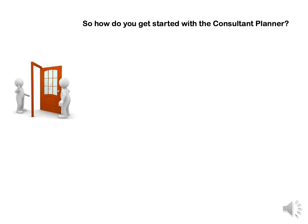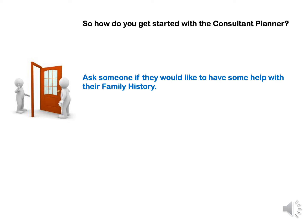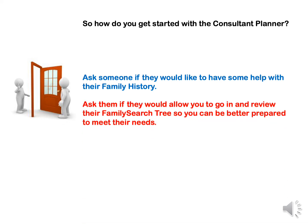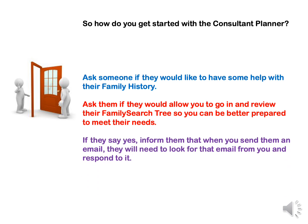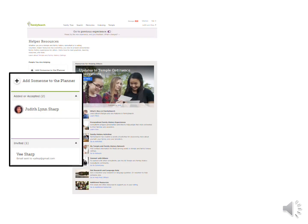So how do you get started with the Consultant Planner? Ask someone if they would like to have some help with their family history. Ask them if they would allow you to go in and review their FamilySearch tree so that you could be better prepared to meet their needs. If they say yes, inform them that when you send them an email, they will need to look for that email and respond to it. To add someone to the planner, click where it says Add Someone to the Planner.